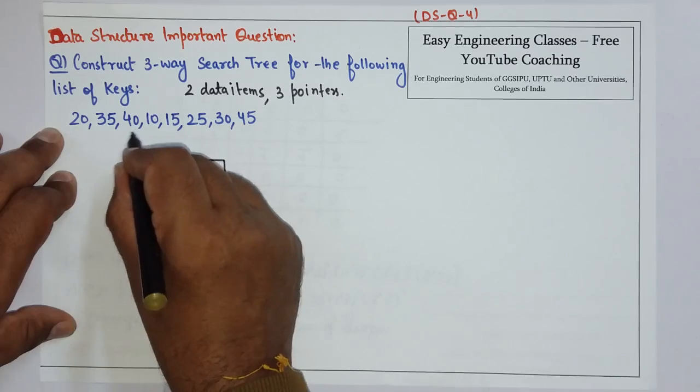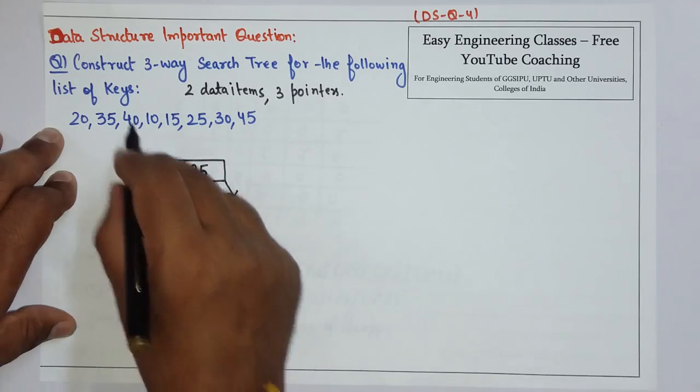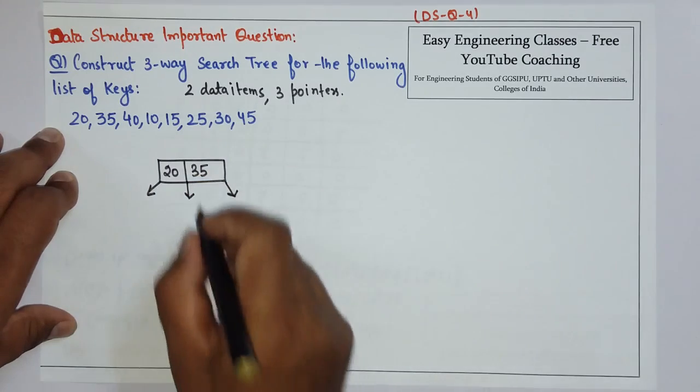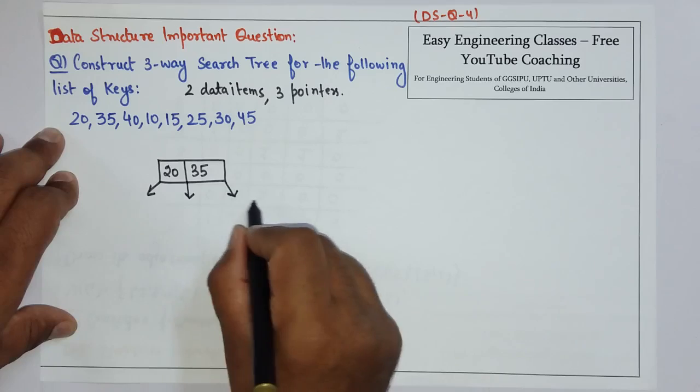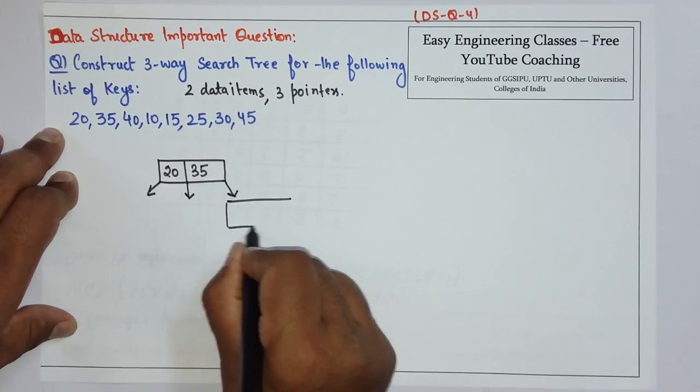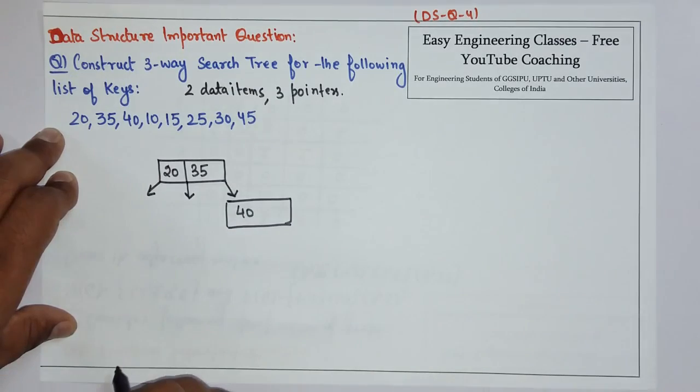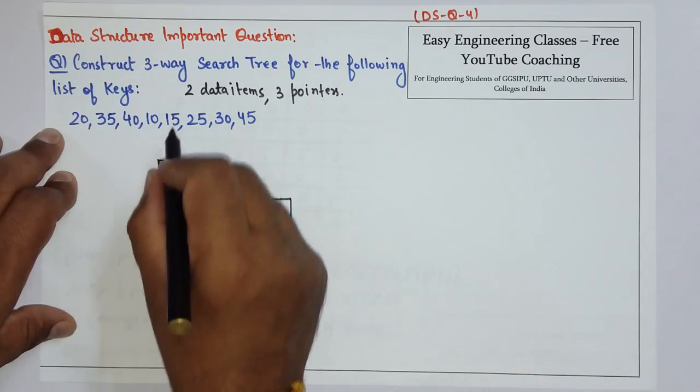So when 40 comes, we cannot add that 40 at this level, we have to come down. Now 40 is greater than 35, so create a node here and add 40 in that.